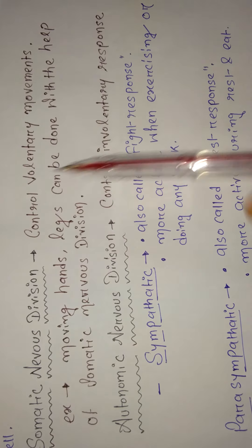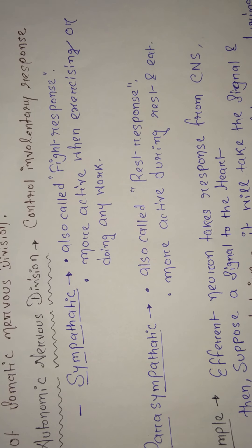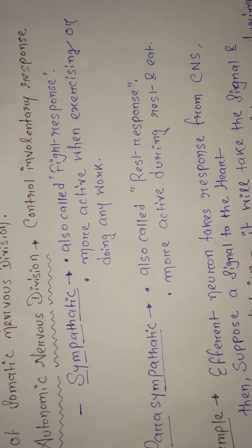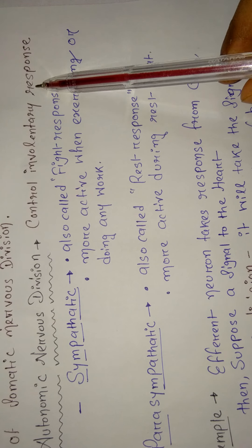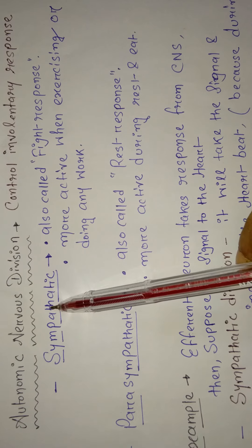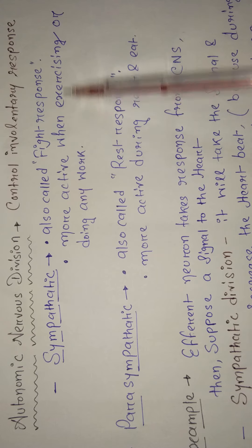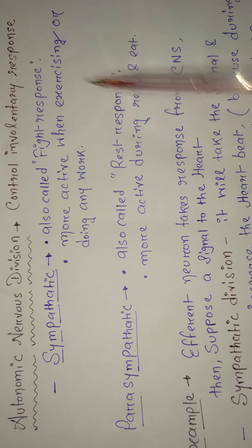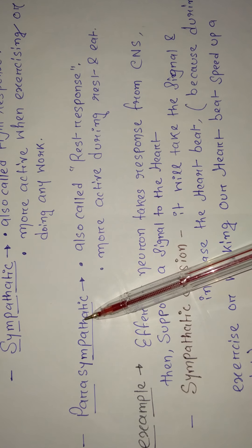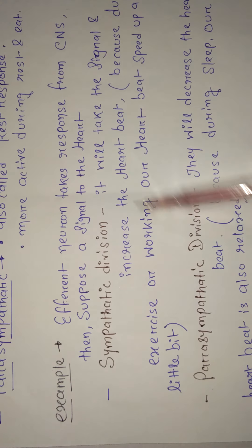The autonomic nervous system controls involuntary responses — things we don't have control over, like heartbeat. The autonomic nervous system is divided into two parts: sympathetic and parasympathetic. Sympathetic is the fight response, more active when we are exercising or doing any work. Parasympathetic is the rest response, more active during rest and eating.